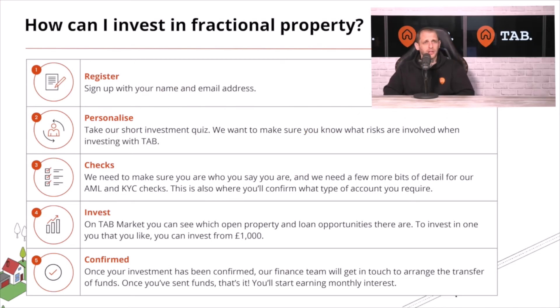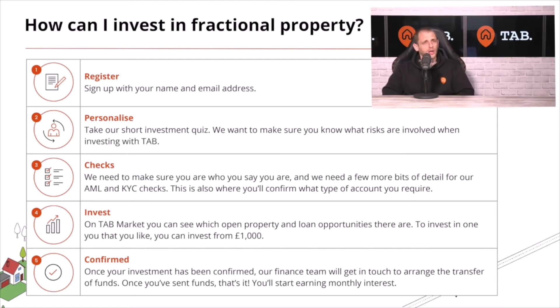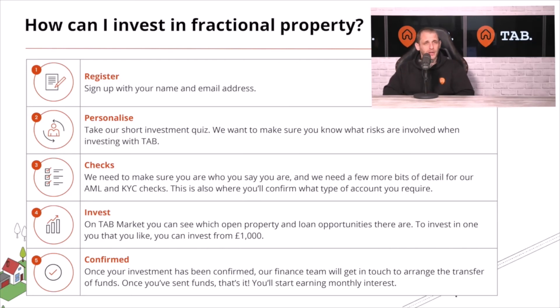So how can you invest? With TAB it's quite easy. First, come to tabhq.com, register your interest, and step-by-step personalise your account and take a short investment quiz. It's extremely important that you understand the risks involved when investing in anything, including property. We'll take you through AML and KYC checks — anti-money laundering and know your customer — all done online with third-party verification software in just a few minutes. From then, you can start to invest directly into property investments and short-term loan investments in the same place. Once confirmed, we'll ask you to send funds before any loan or property purchase can take place.